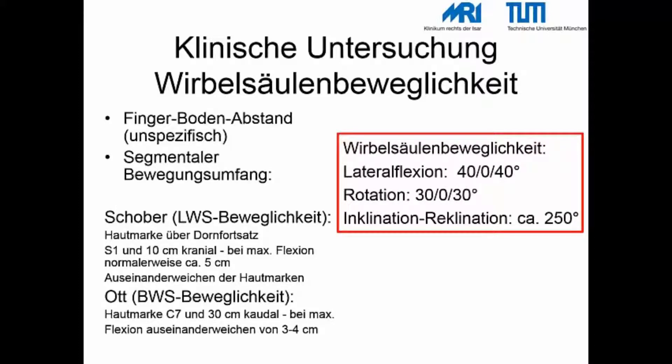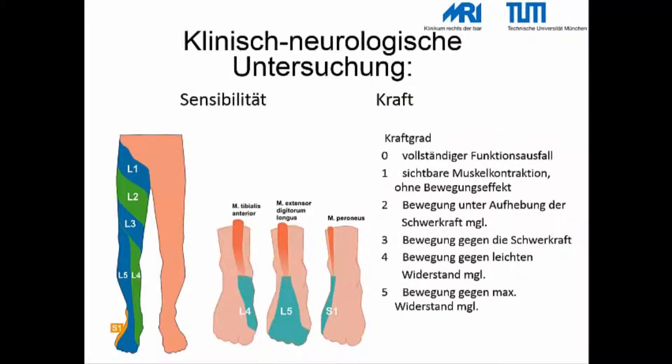Diese Grafik gibt die klinische Untersuchung der gesunden Wirbelsäulenbeweglichkeit wieder. Wichtig sind der Finger-Boden-Abstand und der segmentale Bewegungsumfang. Dieser kann für die Lendenwirbelsäule mit dem Schober-Test und für die Brustwirbelsäule mit dem Ott-Test quantifiziert werden. Die normale Wirbelsäulenbeweglichkeit beträgt in der Lateralflexion 40-0-40, in der Rotation 30-0-30 und in der Inklination-Reklination ca. 250°. Für die Kraftgradmessung gilt: Grad 0 bedeutet vollständiger Funktionsausfall, Grad 5 Bewegung gegen maximalen Widerstand.